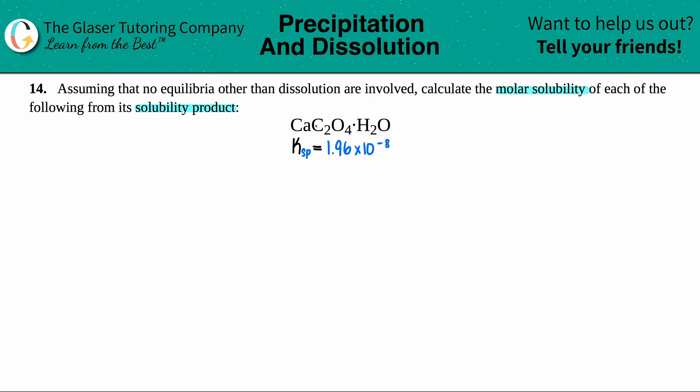So we have to find out what the molar solubility of calcium oxalate hydrate, which is CaC2O4·H2O, from its solubility product.